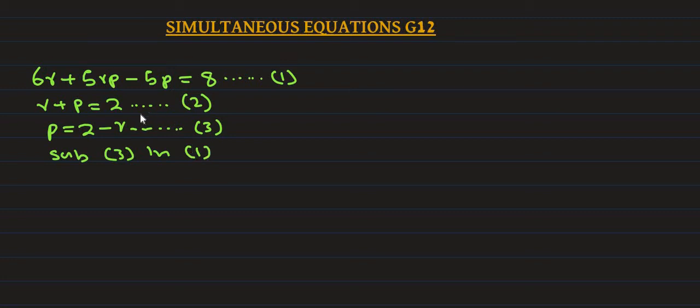We substitute equation 3 into equation 1. Where we have p, we substitute 2 minus r. So we get 6r plus 5r times (2 minus r) minus 5 times (2 minus r) equals 8.